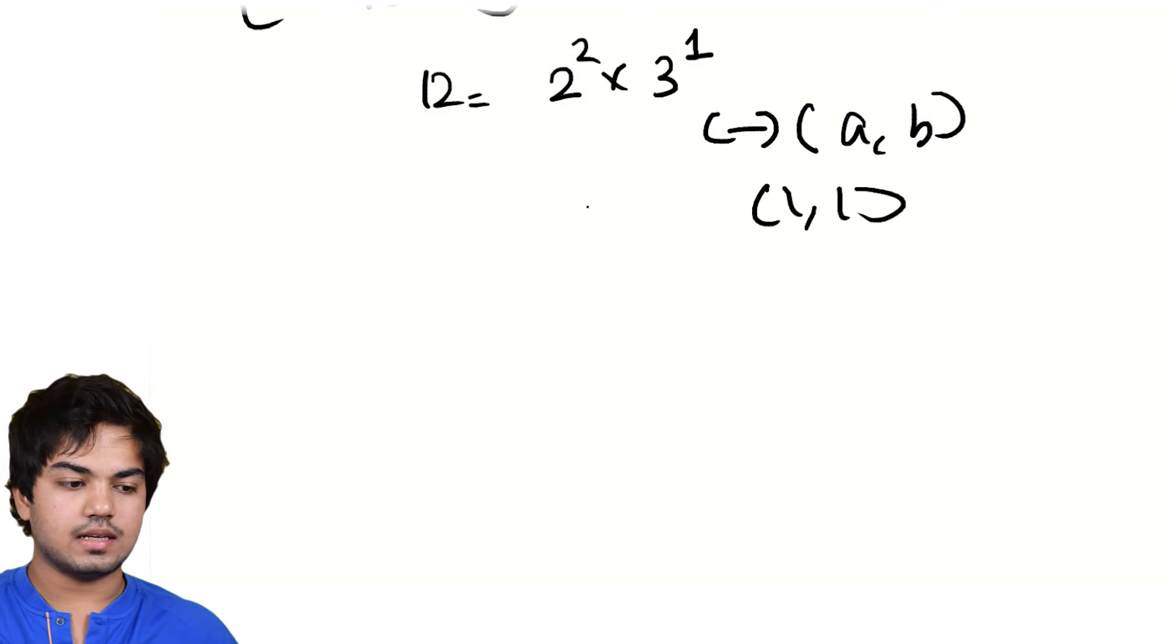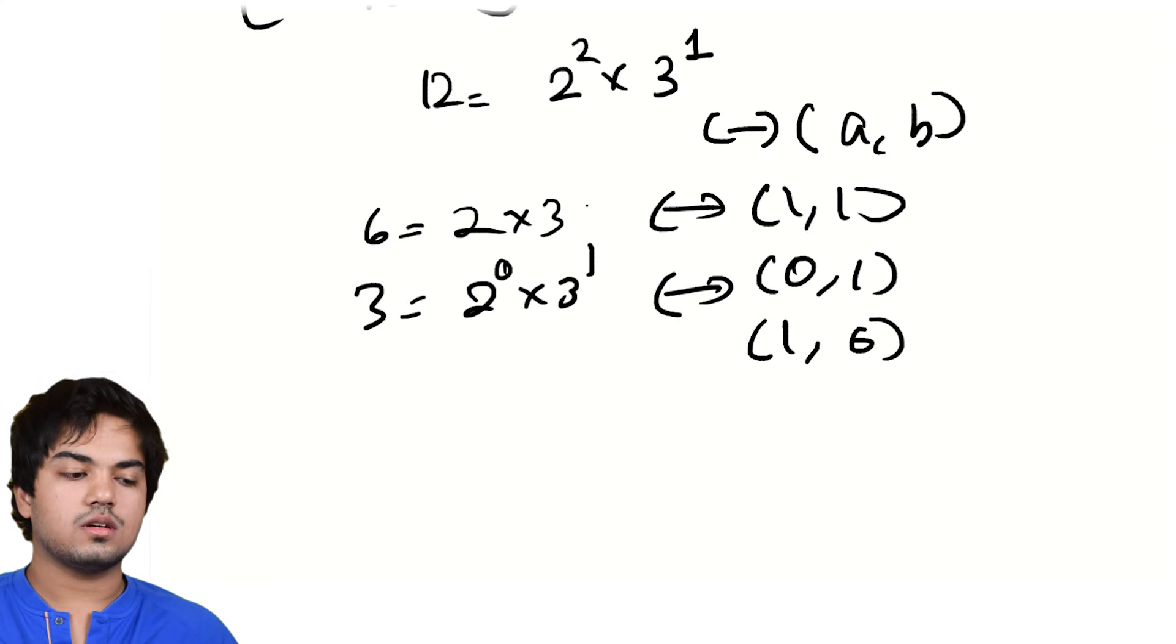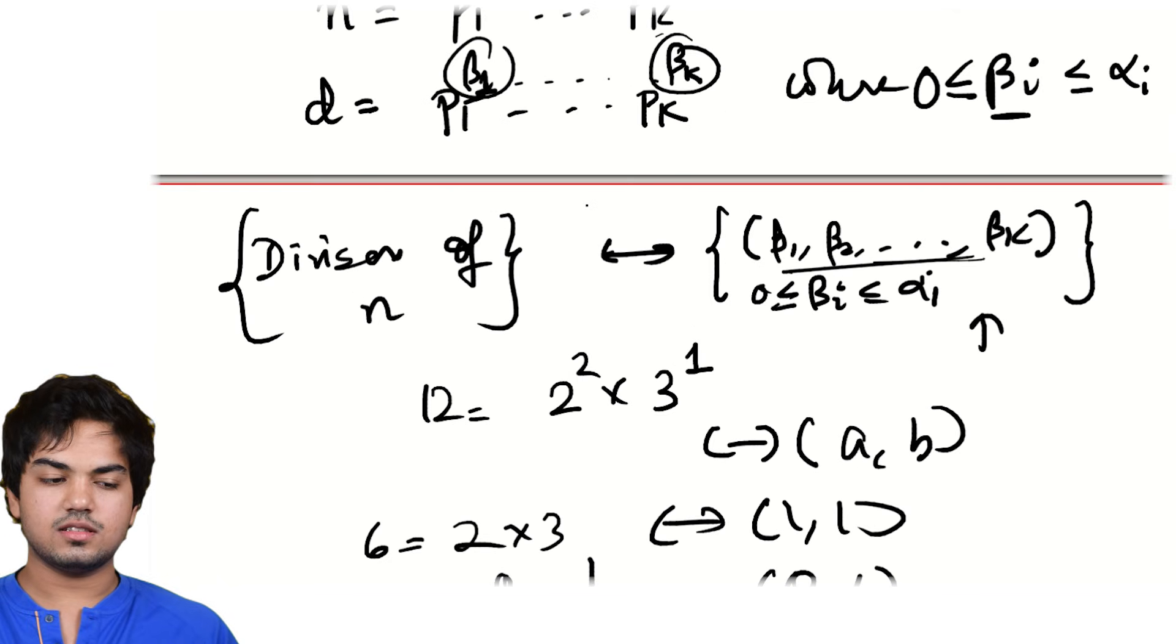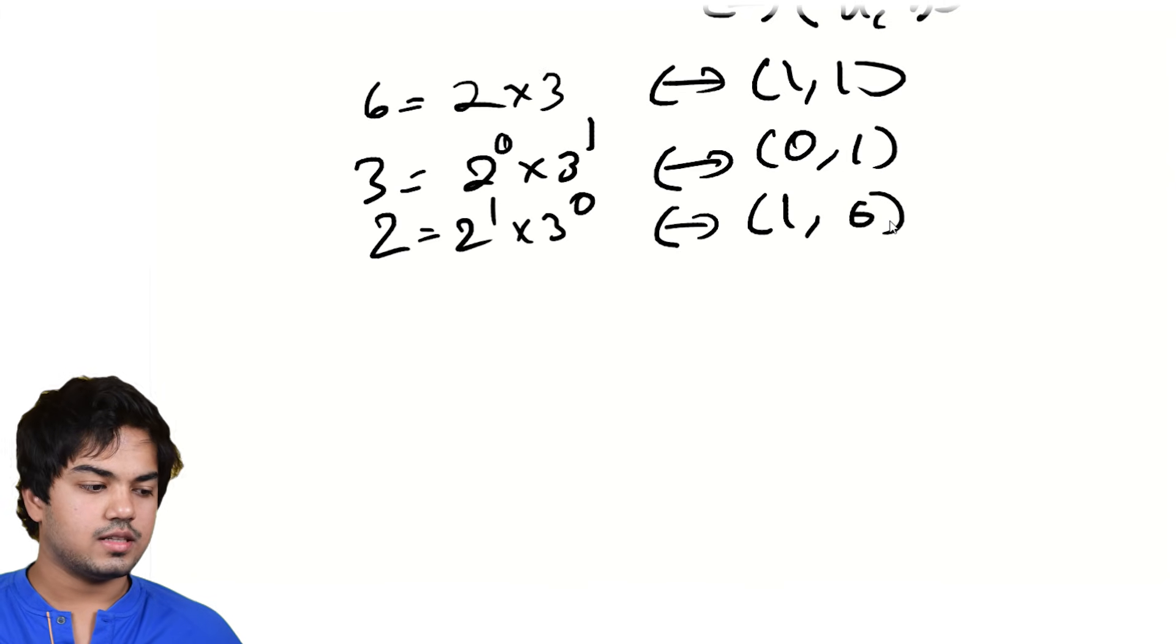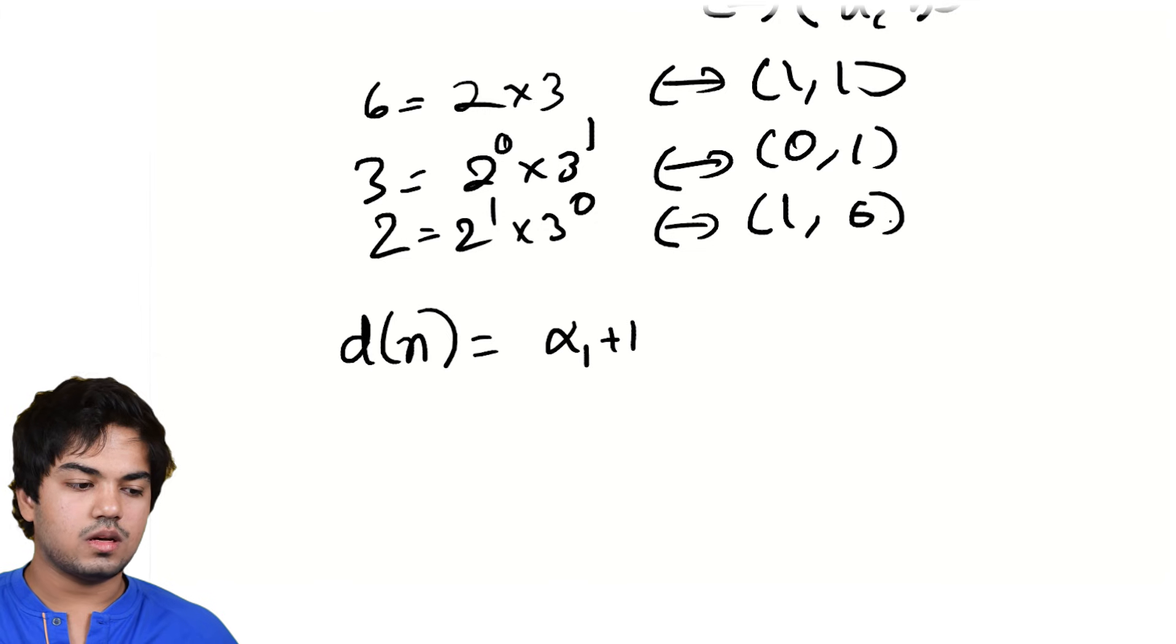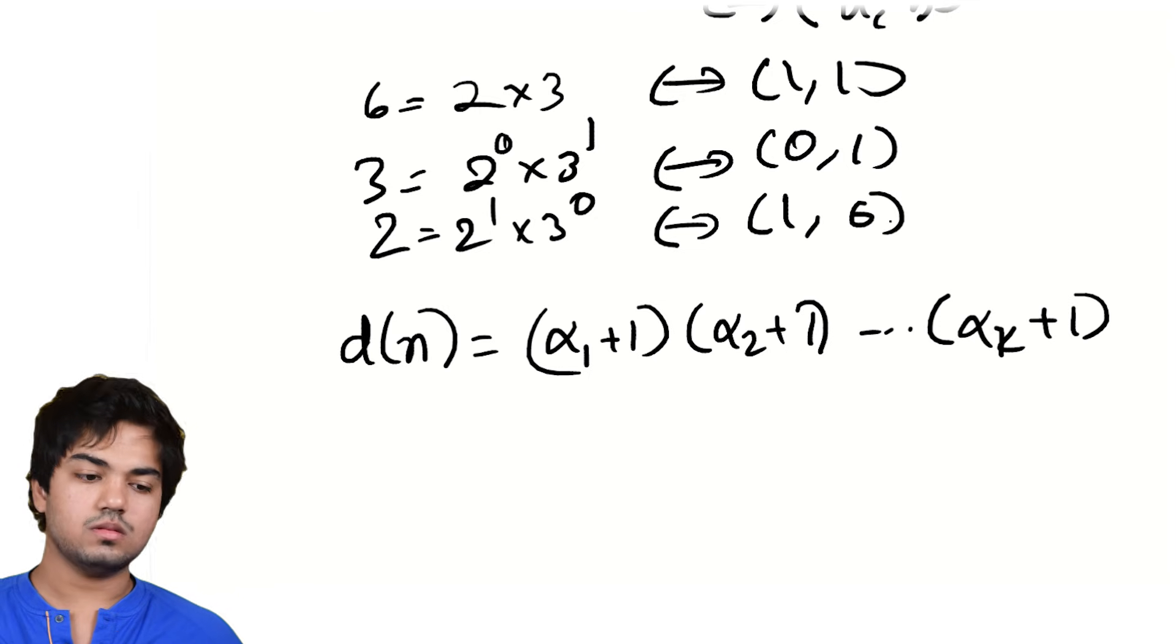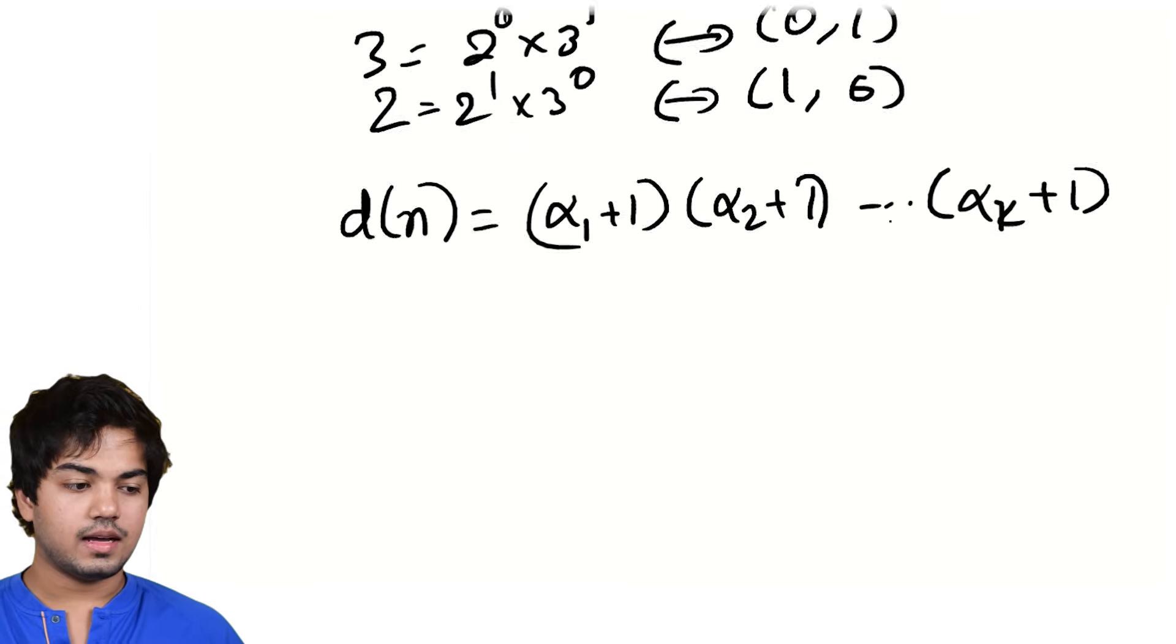So the tuple one comma one, for example here, corresponds to two times three, which is the divisor six. Tuple zero comma one corresponds to two to the zero, three to the one, which is just three. Tuple one comma zero corresponds to the divisor two to the one, three to the zero. You get my drift. But this is surprisingly easy to count. This is just by the multiplication principle. This is just how many choices I have for each spot in the tuple. That's alpha i plus one. And that's the number of numbers from zero to alpha i. So the answer d(n) is equal to alpha one plus one, alpha two plus one, up to alpha k plus one, where n is p one to the alpha one, p two to the alpha two, pk to the alpha k. So really the number of divisors actually has nothing to do with the primes that show up, only the exponent.